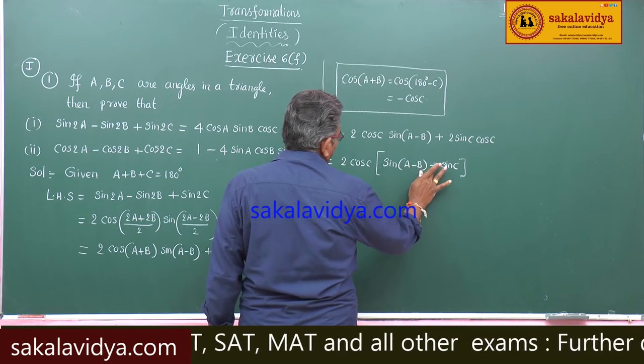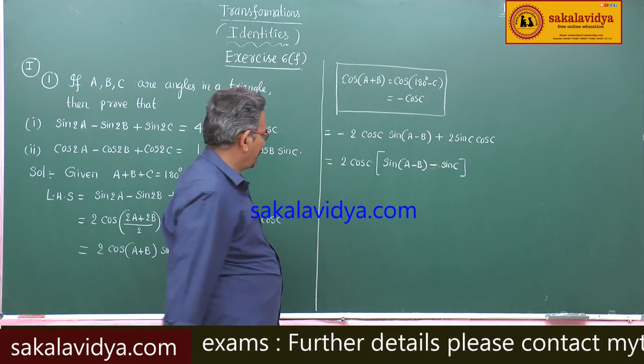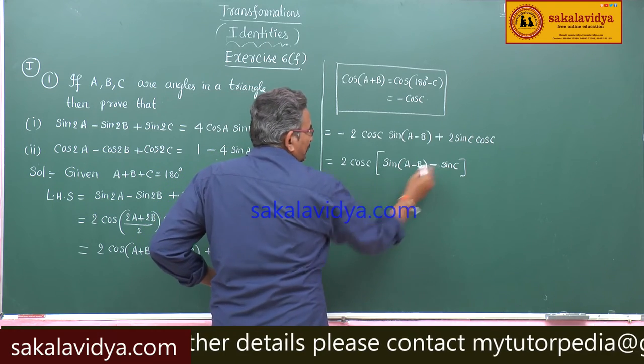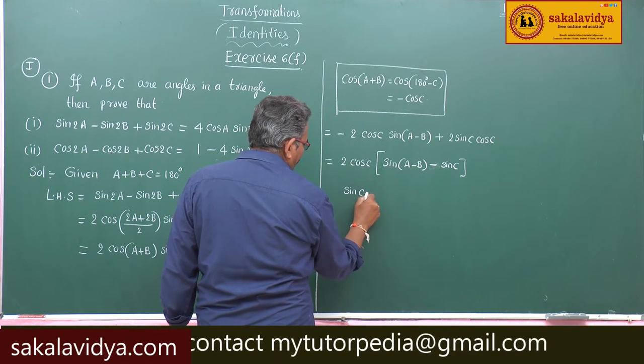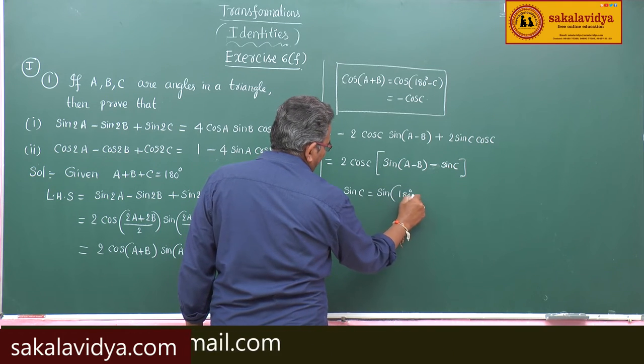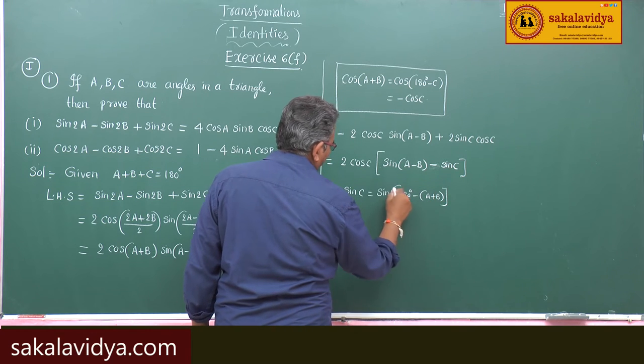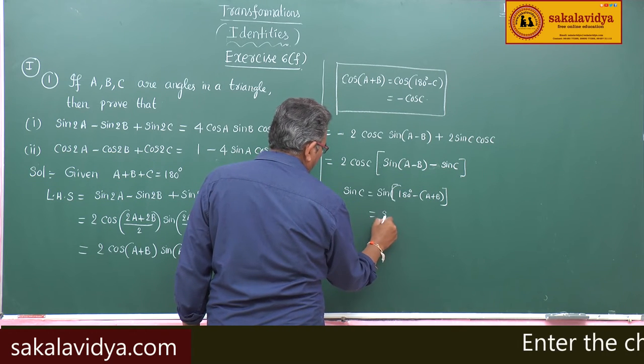This will be minus sin C. Again now, sin C is equal to sin 180 degrees minus A plus B. So this is equal to sin of A plus B.